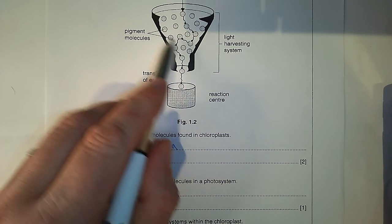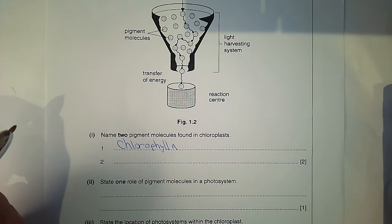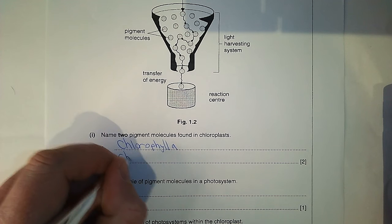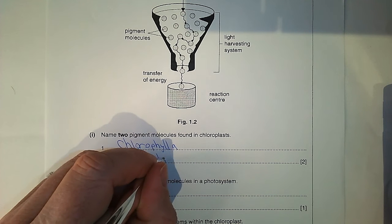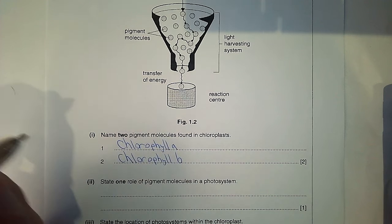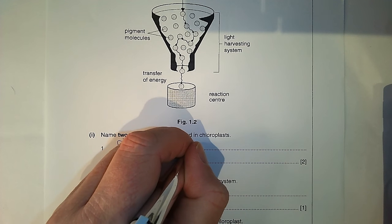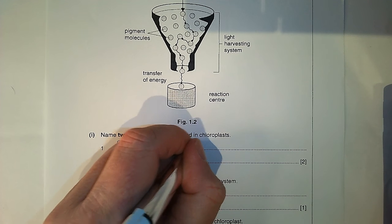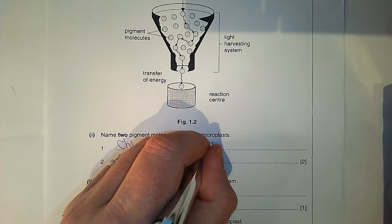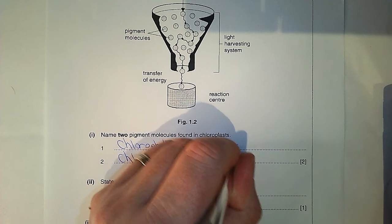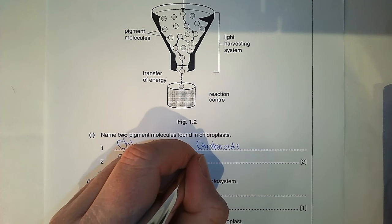The pigments that are found in the light harvesting system, and there's three of those, is chlorophyll b, carotenoids, and xanthophyll.